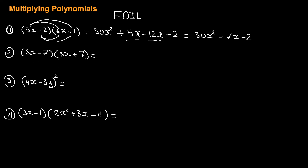Now for the second one, notice that this binomial and this binomial are exactly the same except the sign in the middle — one is negative and one is positive. When that happens, we call this the difference of squares. There's a shortcut: multiply 3x by 3x to get 9x squared, and multiply negative 7 by positive 7 to get negative 49. You can only do that in this kind of situation.